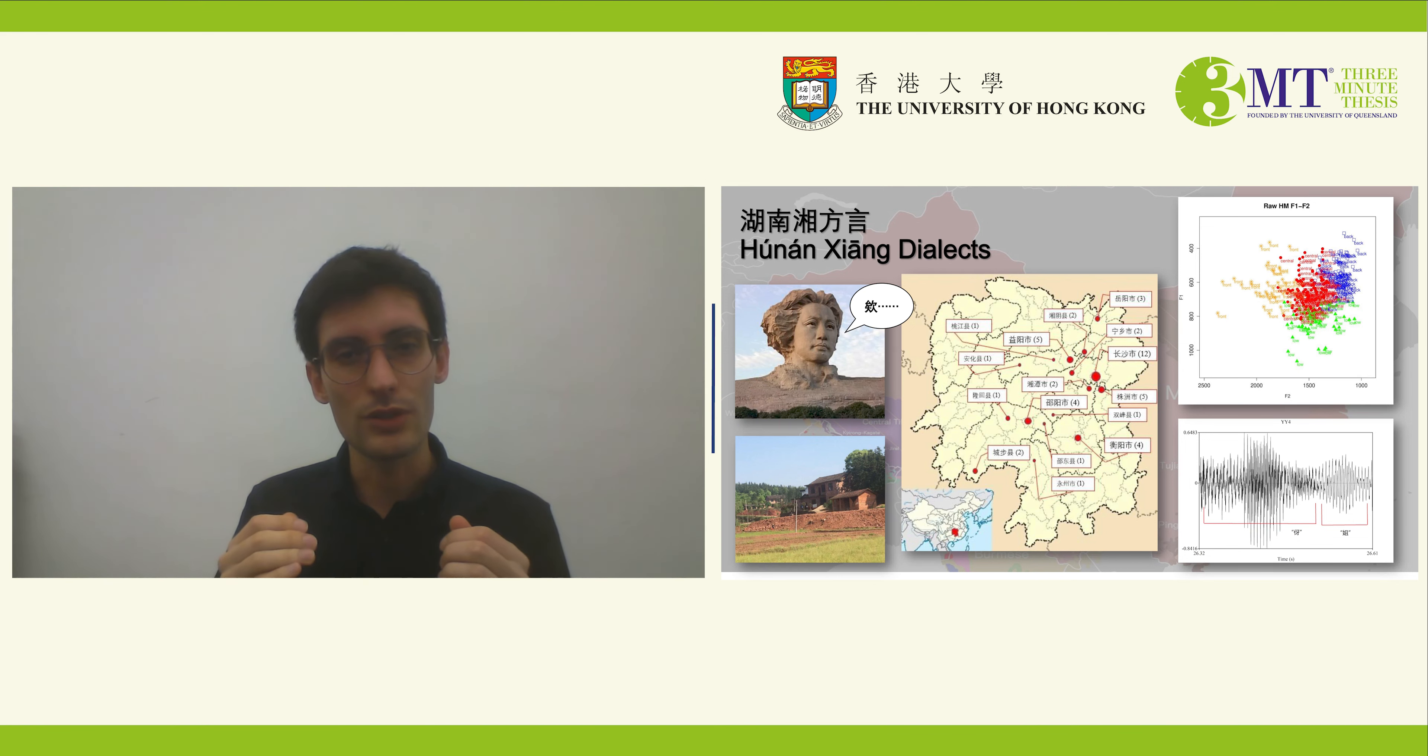The academic consensus here is generally that Xiang represents a transitional node midway between the North and South of China, sharing features of both Northern and Southern Chinese, and in some way mixing them together. In this sense, it's kind of like a linguistic missing link between the North and South.